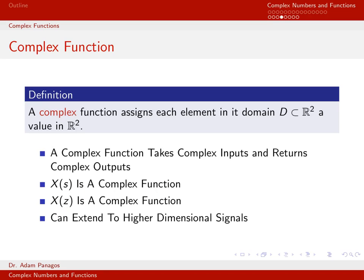Similarly, x of z, the z-transform of the discrete time signal x of k, is also a complex function. Z can be written as r times e to the j theta — it's some number in the complex plane, so there's a complex input. The function x of z in general returns a complex number, a point in the complex plane R². So complex functions take complex inputs and return complex outputs.